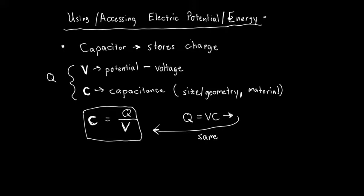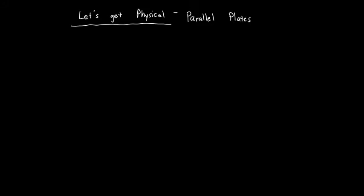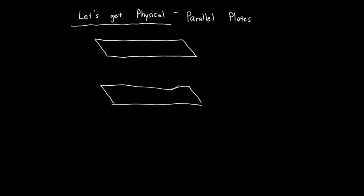One of the most common ways to store charge is with a parallel plate capacitor — two conducting sheets arranged parallel to each other. Each plate has some area A, and they're separated by some distance d. The capacitance of these two plates equals A times epsilon naught, the permittivity of free space, divided by the separation d.